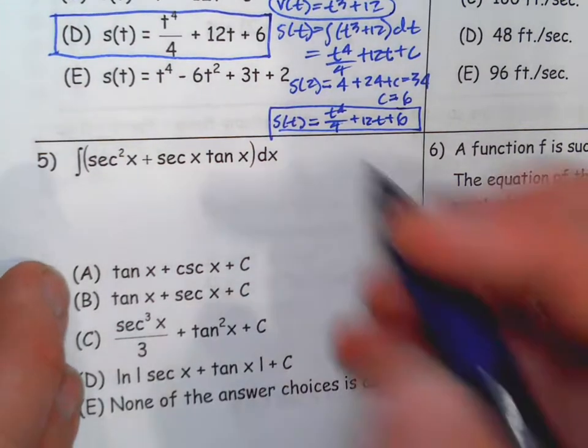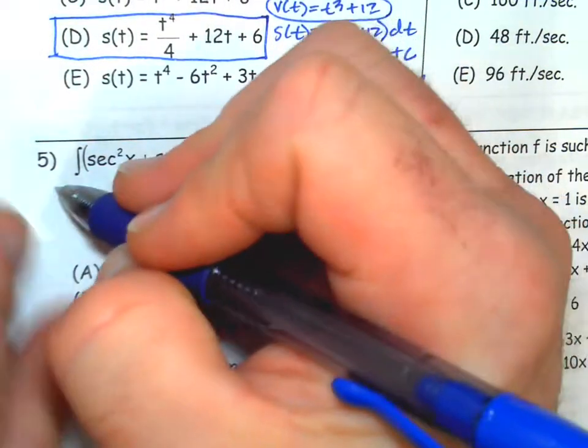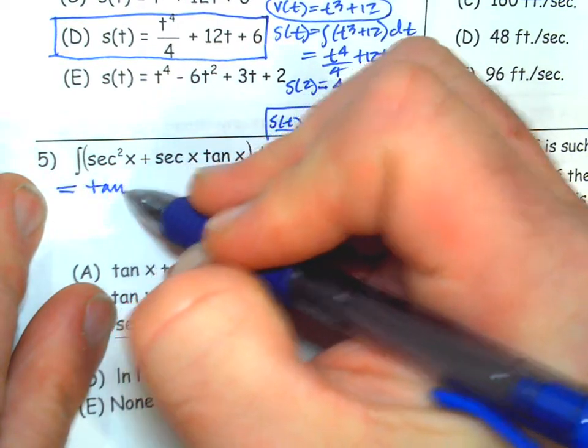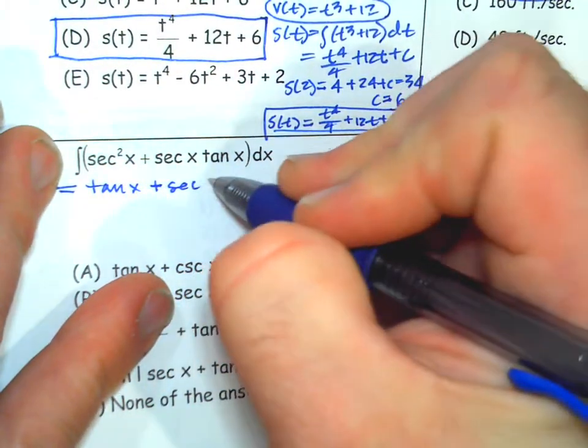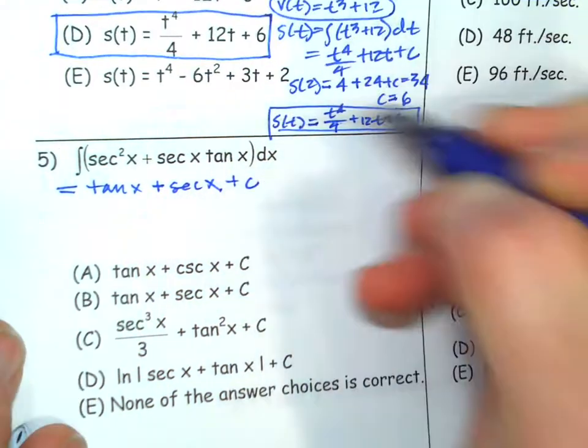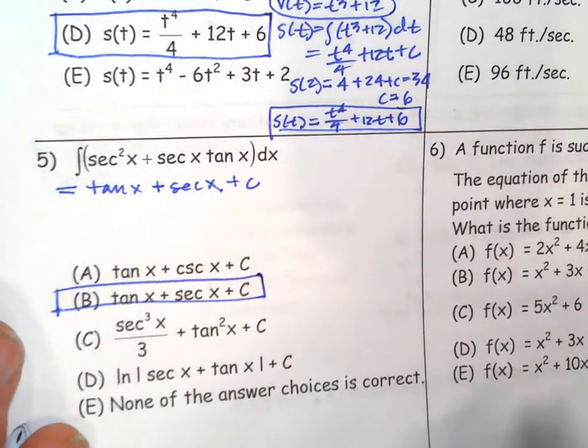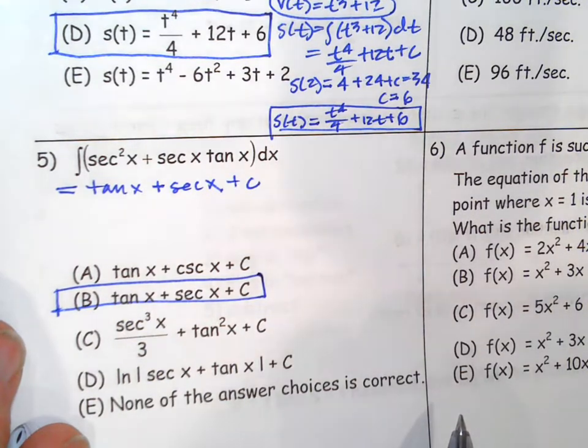A little integration. Well, this one is surprisingly nice. The antiderivative of secant is tangent. The antiderivative of secant tan is secant plus C. Wow. Doesn't get much easier than that, right?